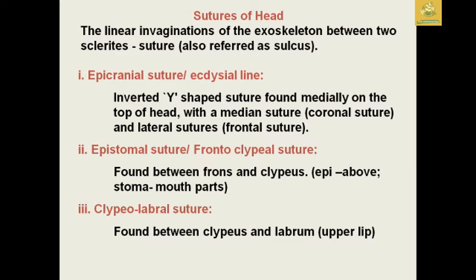The sutures of the head are linear invaginations of the exoskeleton between two sclerites — they are like stitches found between the head sclerites. Sutures are also referred to as sulci. There are three main sutures: the epicranial suture, also known as the ecdysial suture, which is a Y-shaped suture found on top of the head.